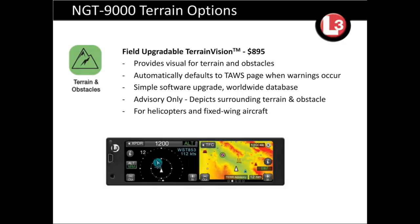Another safety option that can be added now or in the future is our terrain options. We have ETAS — our certified Class B TAWS, which includes aural terrain and obstacle call-outs. Another option everybody is really excited about is terrain vision, which provides visual alerts. Everyone attending this webinar will receive terrain vision at no charge if you purchase a Lynx before August 31st, 2018 — an $895 value. The great part about the terrain options is that the WAAS GPS inside the Lynx NGT 9000 provides exact altitude — 1,200 feet AGL. I've flown around very tall towers in Georgia, Texas, and Florida, and it is that accurate.